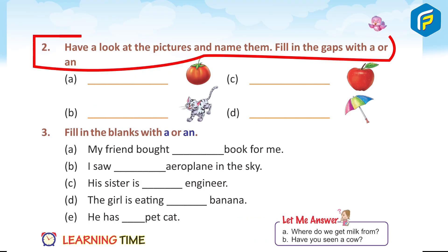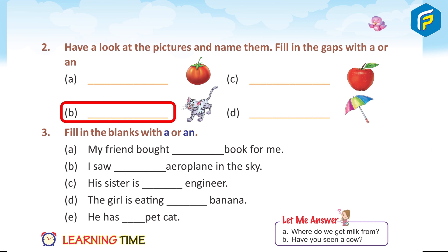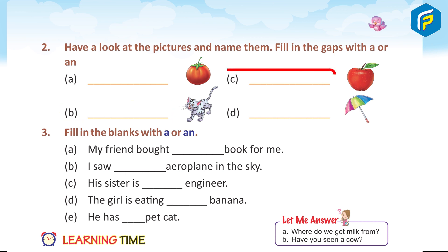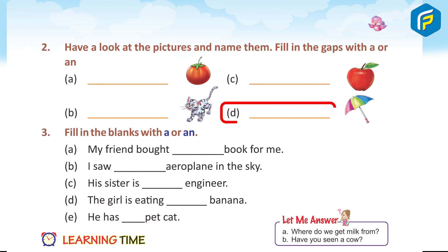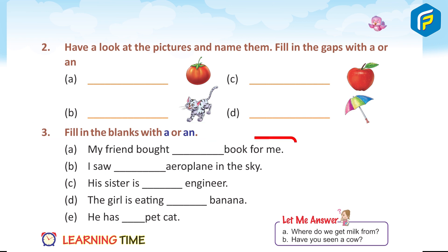Two: Have a look at the pictures and name them. Fill in the gaps with 'a' or 'an'. A) a tomato. B) a cat. C) an apple. D) an umbrella.